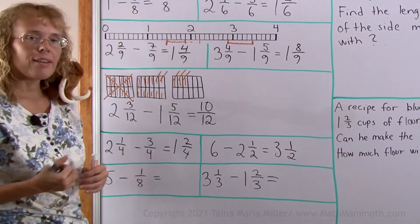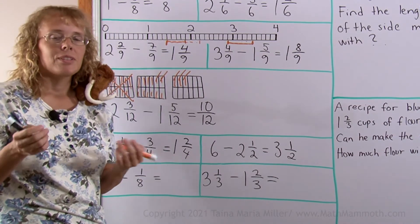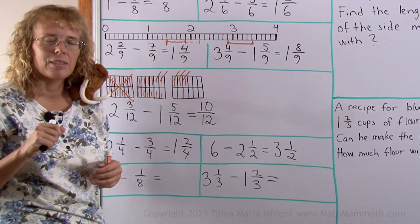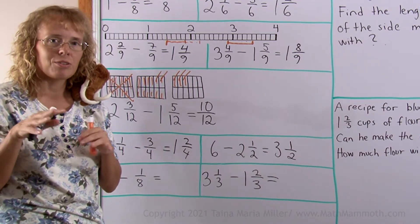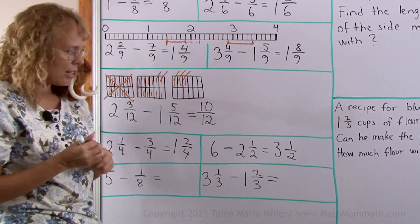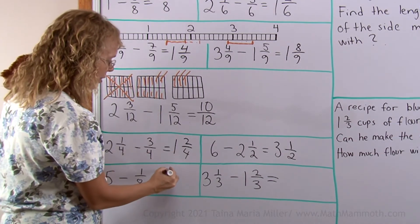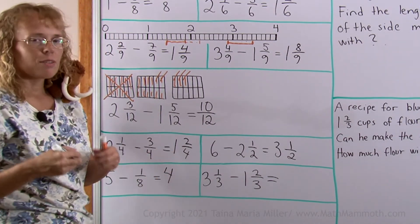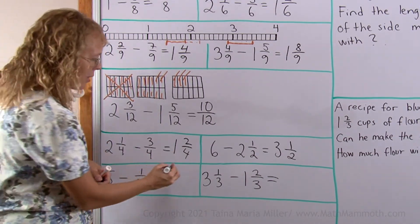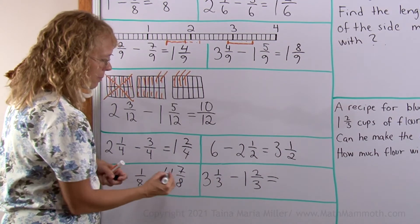5 take away 1 eighth. 5 pies take away 1 eighth — so you need to divide the pies into eighths. In this case you will of course have 4 whole pies left, and from the last pie, 7 eighths will be left.